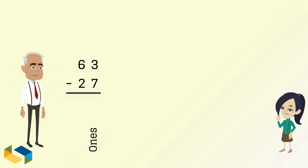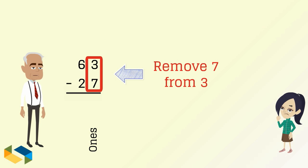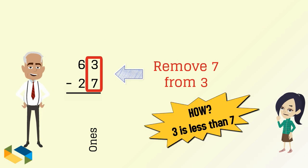At the ones place, we have to remove 7 from the number 3. But how do we do that, as 3 is less than 7?